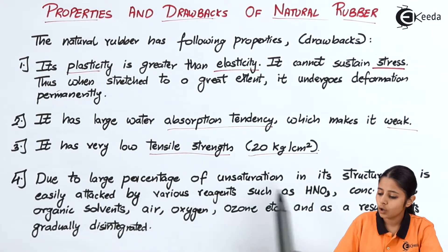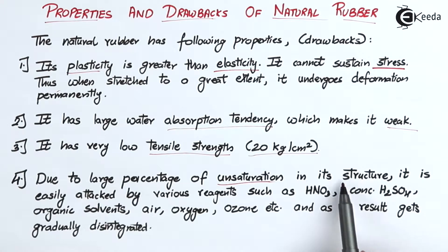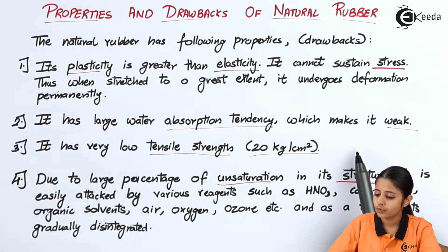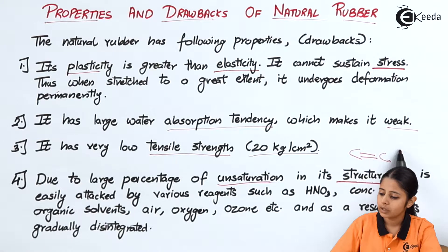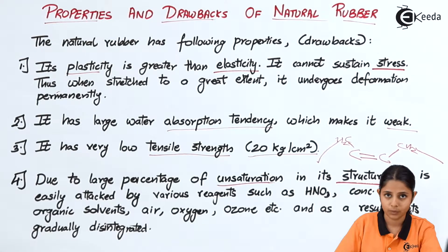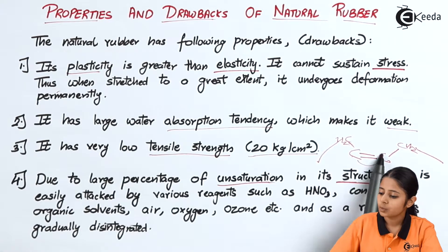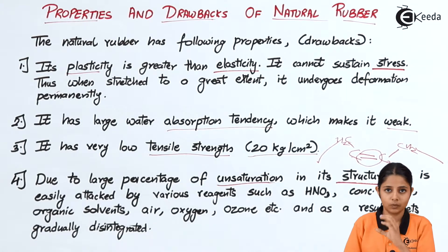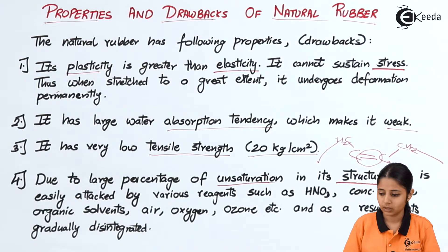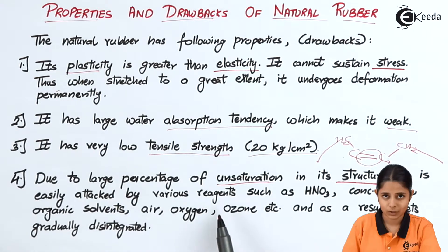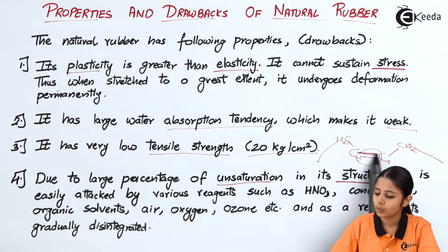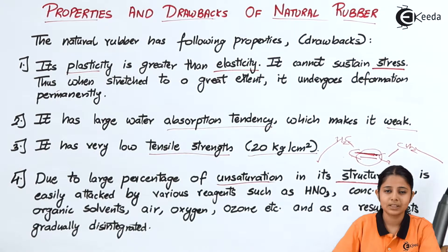Point number four: due to a large percentage of unsaturation in the structure. The structure of rubber is hydrocarbons containing carbon and hydrogen. There are carbon-carbon double bonds, with methyl groups attached. Any carbon attached by a double or triple bond is known as an unsaturated carbon; any carbon attached by a single bond is a saturated carbon. Because of this high percentage of unsaturation, rubber is easily attacked by various reagents — the pi bond is a weak bond and many reagents can attack it.